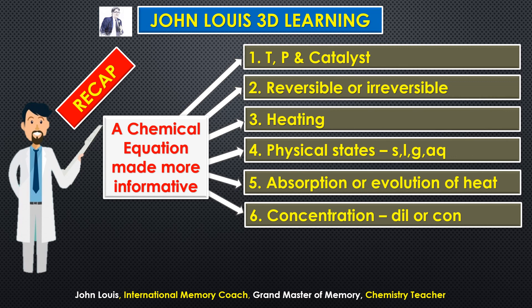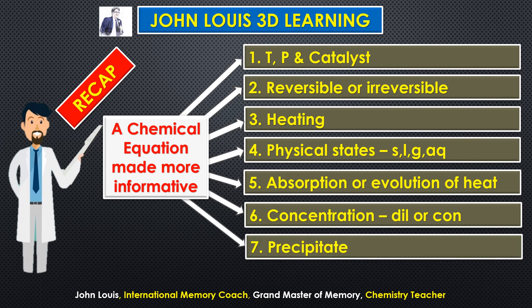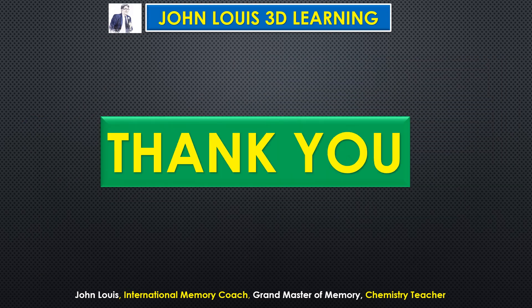Sixth: the concentration of the reactants — whether dilute or concentrated. And finally, seventh: whether a precipitate is formed or not, indicated by a downward-pointing arrow after the formula of that chemical. I hope you understood this and liked the video. Thank you very much for watching. Until we meet next time, bye bye.